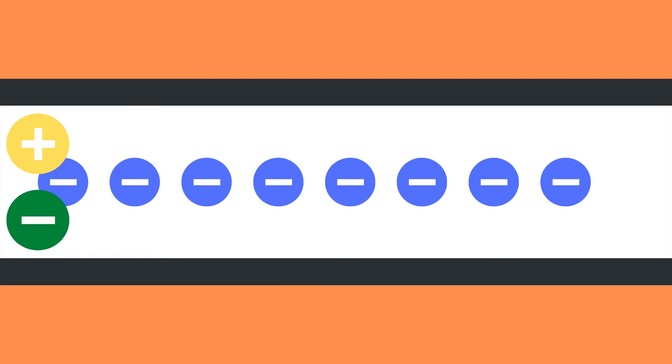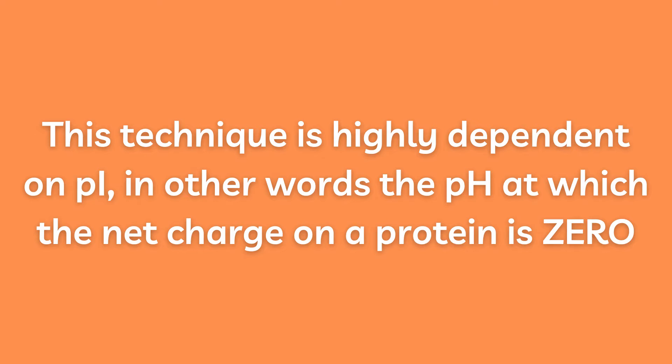Ion exchange chromatography separates proteins or any biomolecules based on the differences in their net charge at a particular pH. Protein charge depends on the number and type of ionizable amino acid sidechain groups.